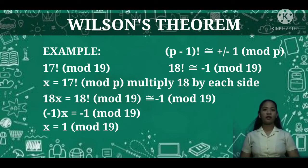Then we can set up an equation x = 17! (mod 19) and multiply each side by 18. It will be 18x = 17! × 18 = 18! (mod 19) ≅ -1 (mod 19).